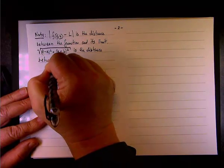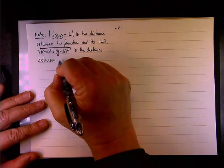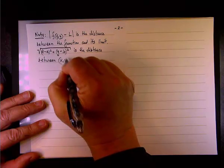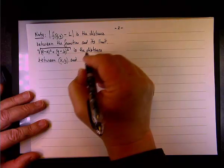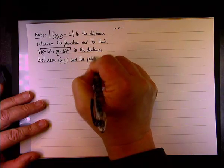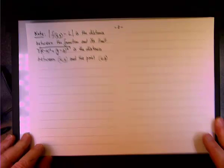The square root of x minus a squared plus y minus b squared is the distance. Okay? This is the distance between the point, or between all points, say x, y, and the point a, b.